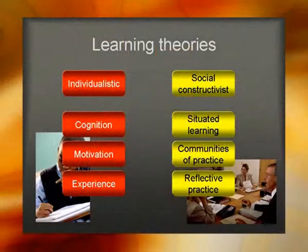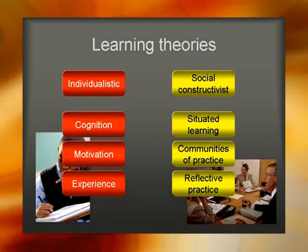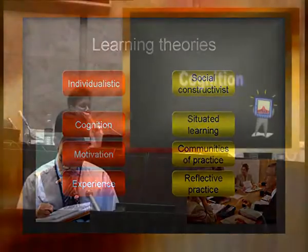Under the individualistic ones, there are theories of cognition, theories of motivation, and theories of experiential learning. Under the social constructivist models, there are theories of situated learning, theories of communities of practice, and theories of reflective practice. Let's just review those quickly.